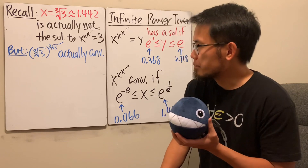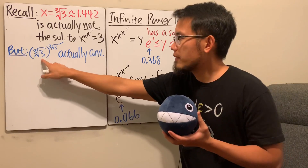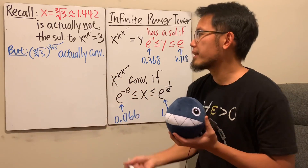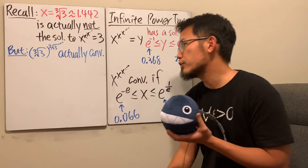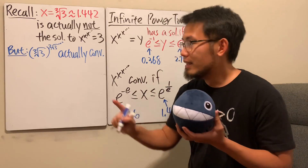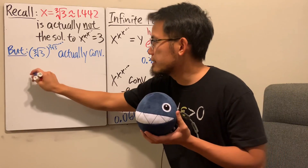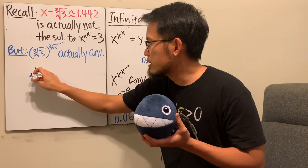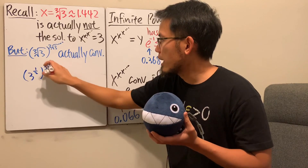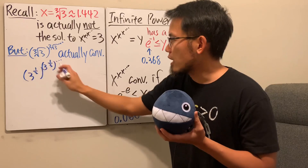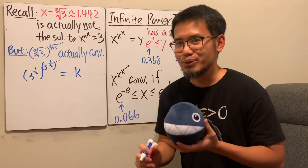So here's the interesting part: the cube root of 3 is not a solution to x^x^x...=3, yet the tower of cube-roots-of-3 converges. Why? Let's figure out what value it actually converges to. For that we need the Lambert W function — I have lots of videos on it, so review those if needed. Since the tower converges, I'll call its value k, to avoid confusion with x and y already in use.